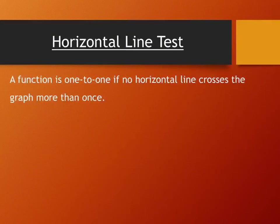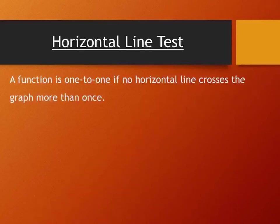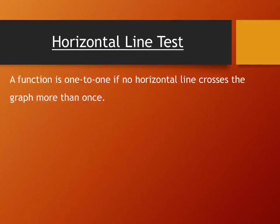We had the vertical line test before, which told us whether something was a function — we dropped vertical lines and checked if the graph was crossed twice. Now we have a horizontal line test. A function is one-to-one if no horizontal line crosses the graph more than once. A graph is a function if no vertical line crosses it more than once, and it's one-to-one if no horizontal line crosses it more than once.